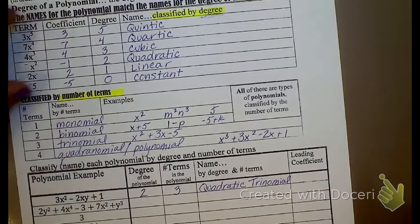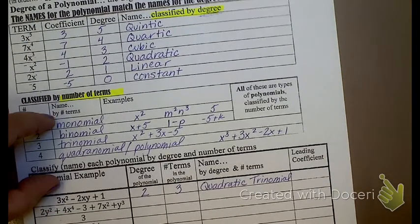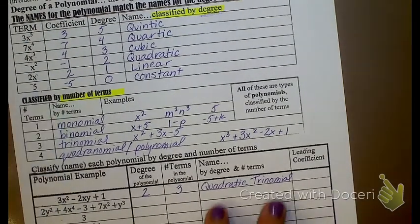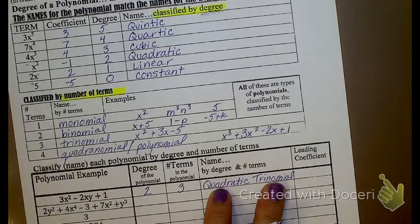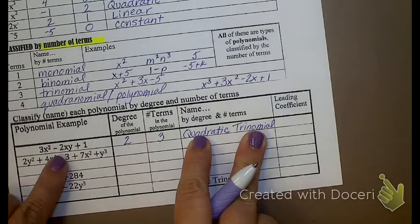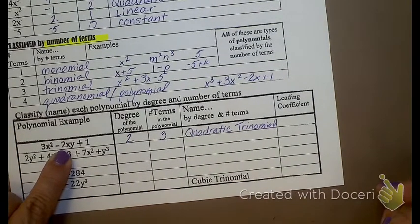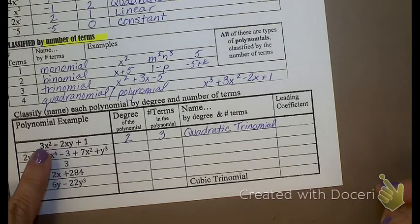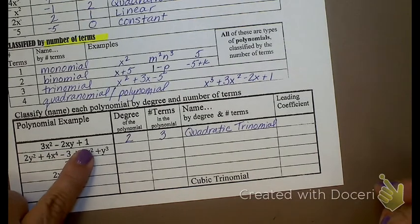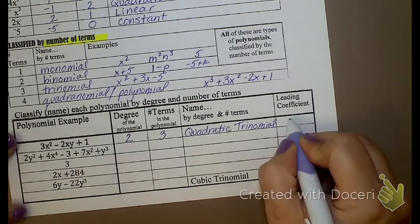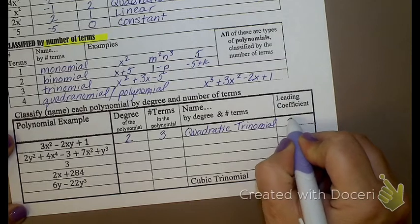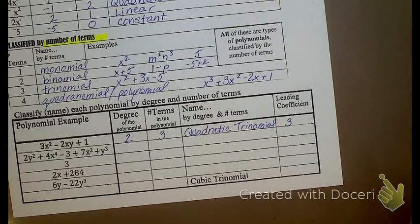So you're going to get the degree and the number of terms — that gives you what it's called. Is this in standard form? Again, looking at the x's, I have x to the second, x to the first, there's my x to the zero. It is. What's my leading coefficient? Three. Pretty easy.